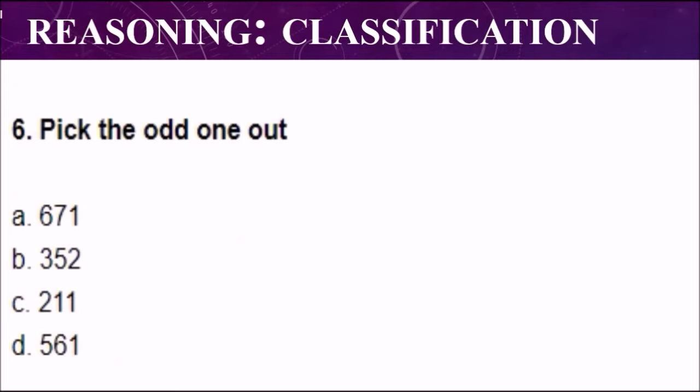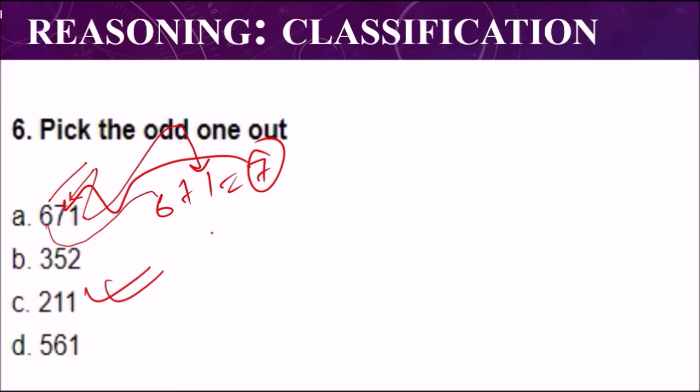This is question number six: pick the odd one out. The correct answer is option number C, that is 211, because the middle number is addition of first and third numbers. You can see six plus one is seven in option one. Again in option B, three plus two is five, the middle number.